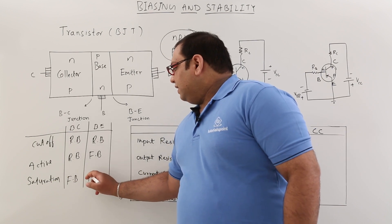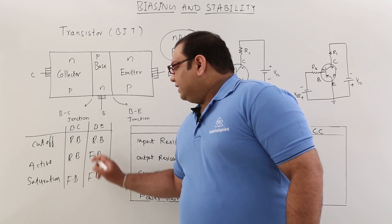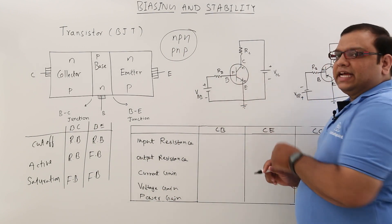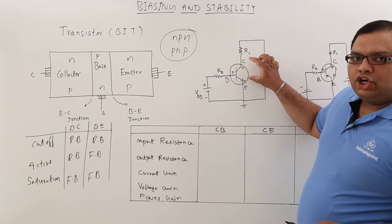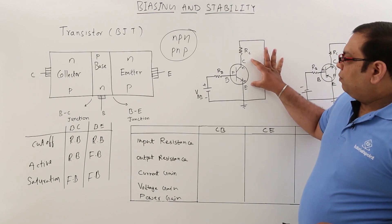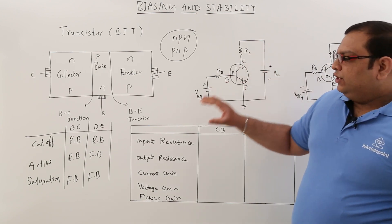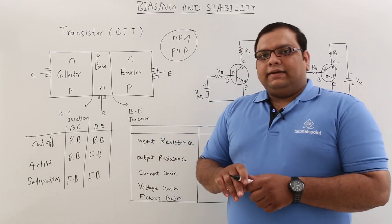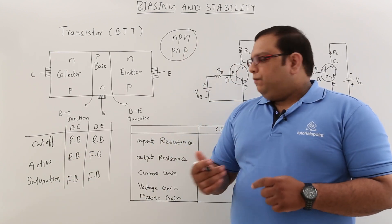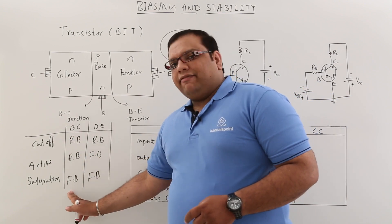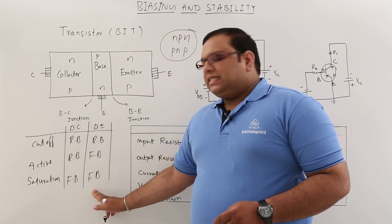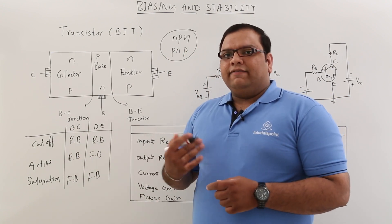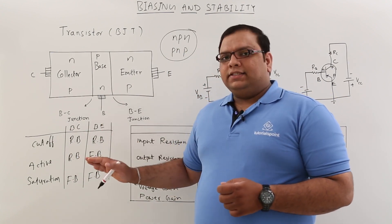In the saturation region, both the base-collector and base-emitter junctions are forward biased. Since both junctions are conducting, the transistor acts as a short circuit, and the output voltage is very low. There is also a fourth region called reverse active, where the base-collector is forward biased and the base-emitter is reverse biased, but reverse active has no significant practical use.